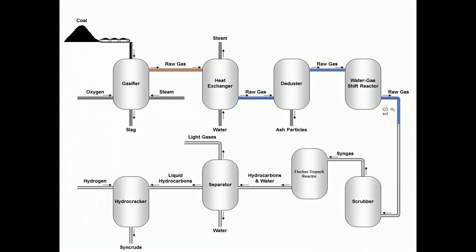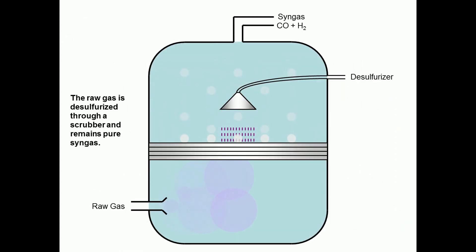The raw gas is then sent to a scrubber. In the scrubber, the raw gas is desulfurized and purified into a mixture of carbon monoxide and hydrogen. It is traditionally called syngas.